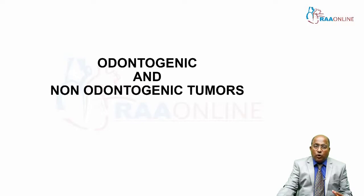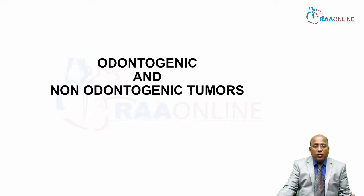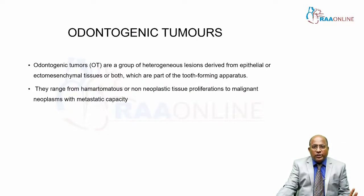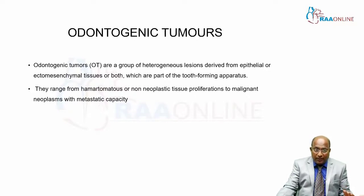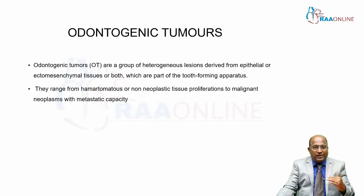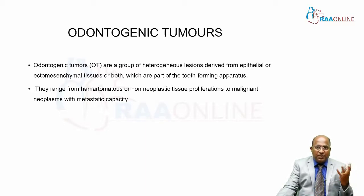In the orofacial region, we talk about odontogenic tumors — those arising from teeth and their supporting structures — and non-odontogenic tumors, which are not from the dental epithelium. Odontogenic tumors are heterogeneous, not homogenous. These are lesions derived from epithelial tissue or from the ectomesenchyme.